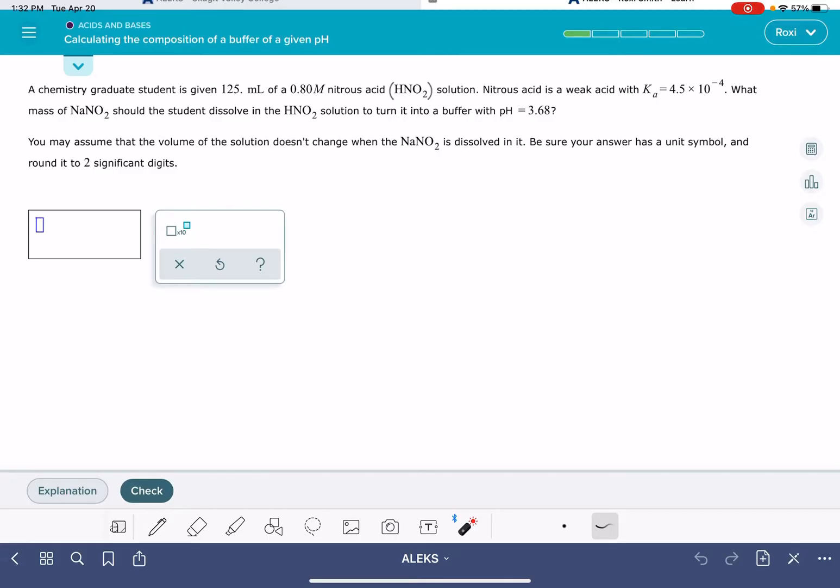And then you're going to be asked to calculate the mass of a particular substance that's necessary to create a solution that has a specific pH. The easiest way to solve this problem will be to use the Henderson-Hasselbalch equation: pH equals pKa plus the log of the concentration of the base over the concentration of the acid.